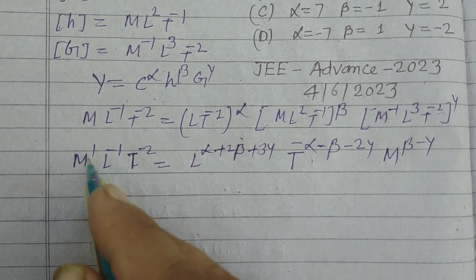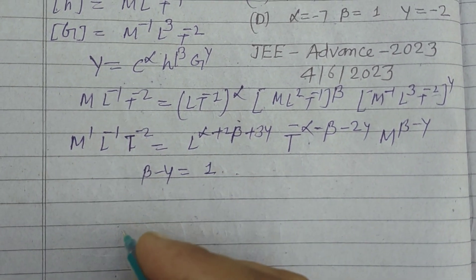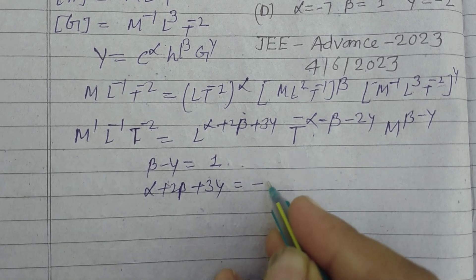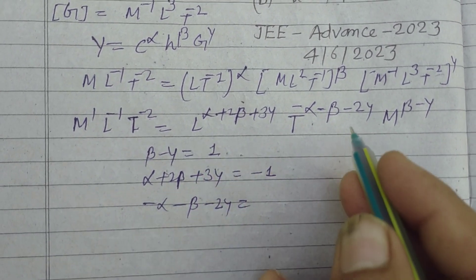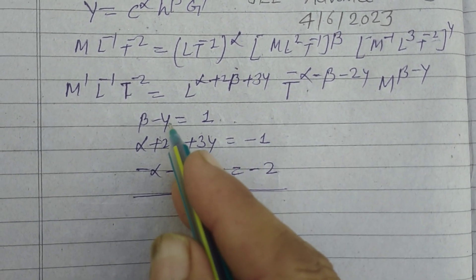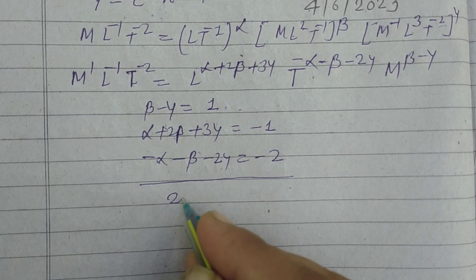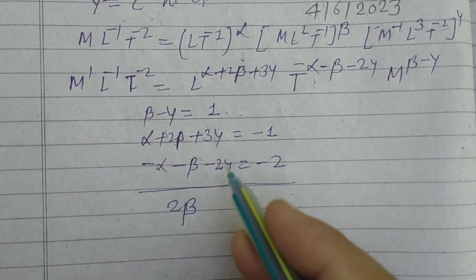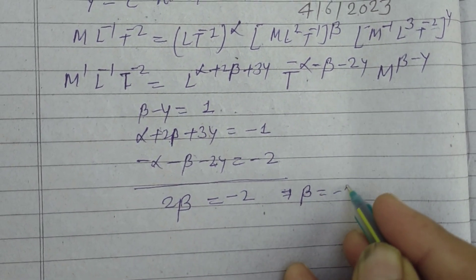Comparing respective dimension powers from both sides: beta minus gamma equals 1; alpha plus 2 beta plus 3 gamma equals minus 1; and minus alpha minus beta minus 2 gamma equals minus 2. Adding all three equations, the alpha terms cancel, and the gamma terms cancel, leaving 2 beta equals minus 2, therefore beta equals minus 1.